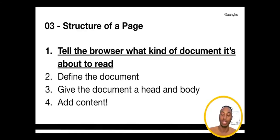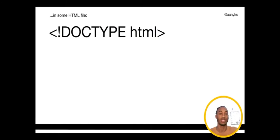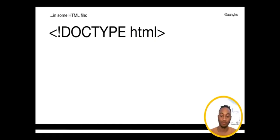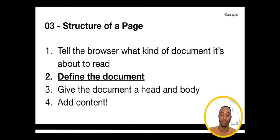The first step is telling the browser what kind of document it's about to read. In HTML it looks like this: a less-than sign, an exclamation point (called a bang in many programming languages), then DOCTYPE in all caps, followed by html, then a greater-than sign. Essentially you're telling the browser it's about to read an HTML file — a basic web page. The next step is to define the document using tags that say html.